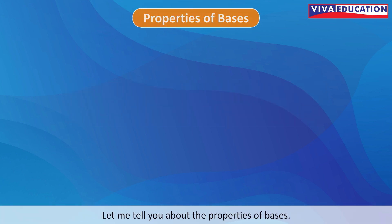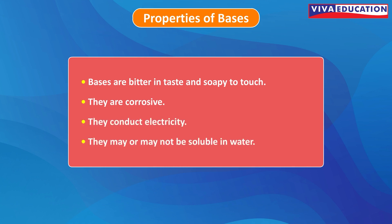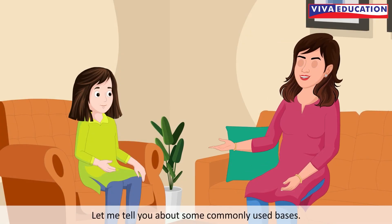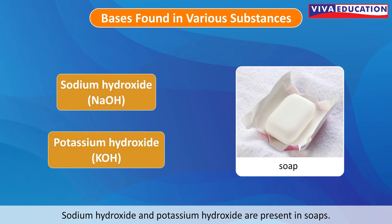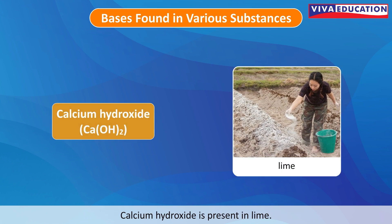Let me tell you about the properties of bases. Bases are bitter in taste and soapy to touch. They are corrosive. They conduct electricity. They may or may not be soluble in water. Some commonly used bases include sodium hydroxide and potassium hydroxide, which are present in soaps; aluminium hydroxide, present in window cleaning solutions; and calcium hydroxide, present in lime.